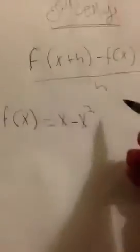The difference quotient formula is: f(x+h) minus f(x), all over h. The function for problem 29 is f(x) = x minus x squared.